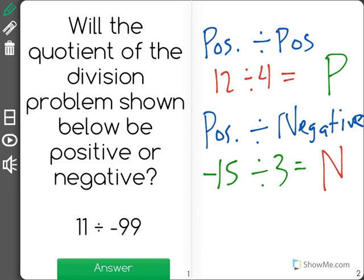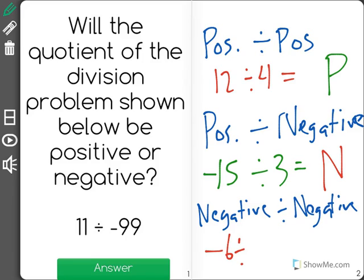And then last we could have negative divided by a negative. So that would be something like negative 6 divided by negative 2, and the answer for that will be positive.